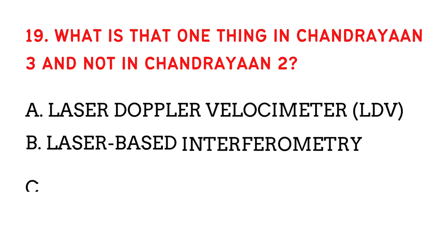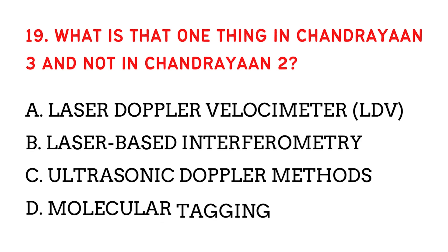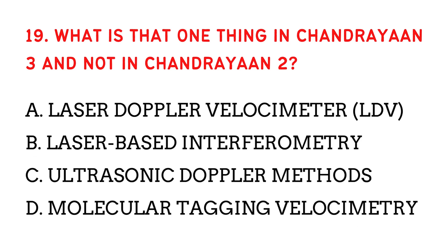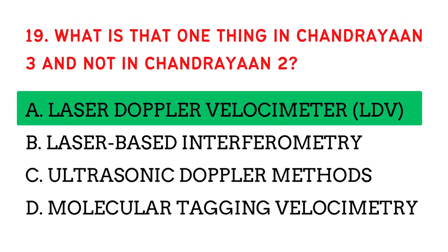What is that one thing in Chandrayaan 3 and not in Chandrayaan 2? The answer is Laser Doppler velocimeter.